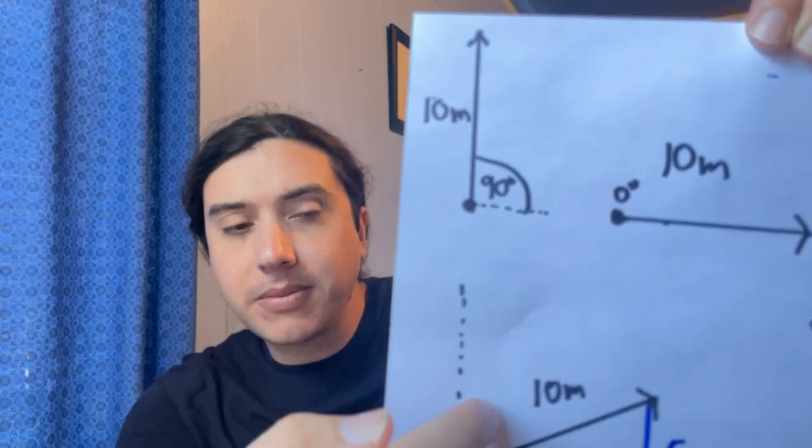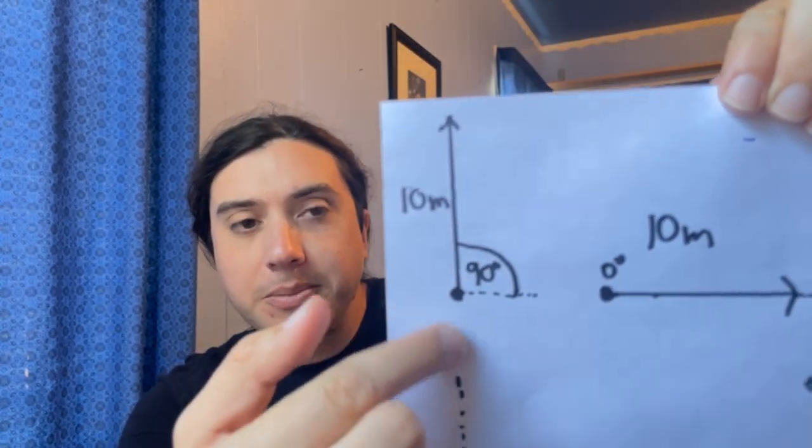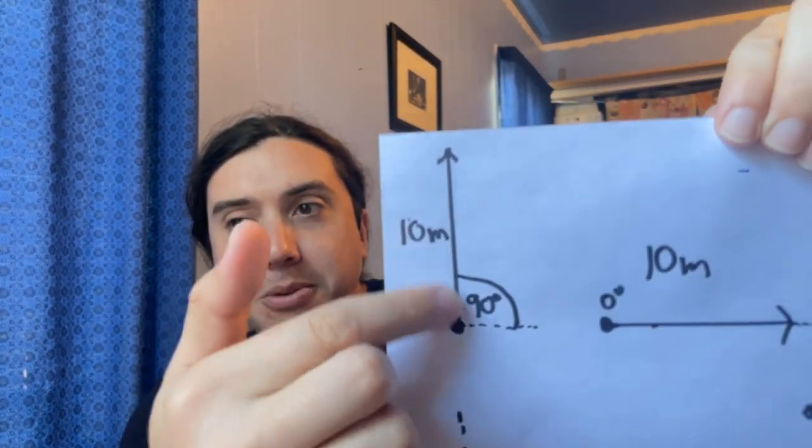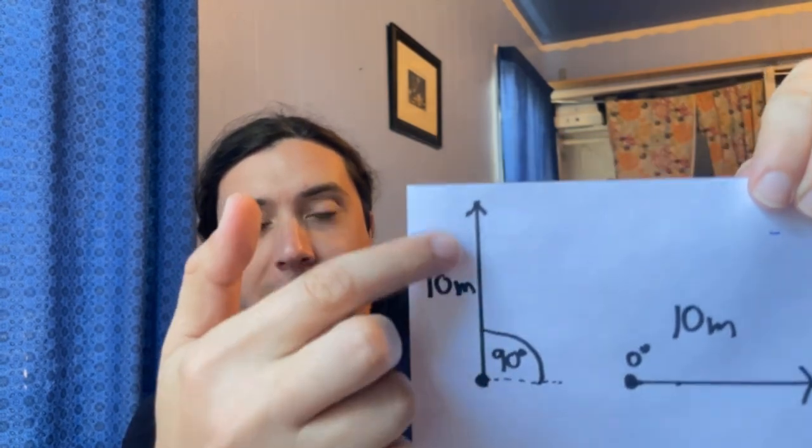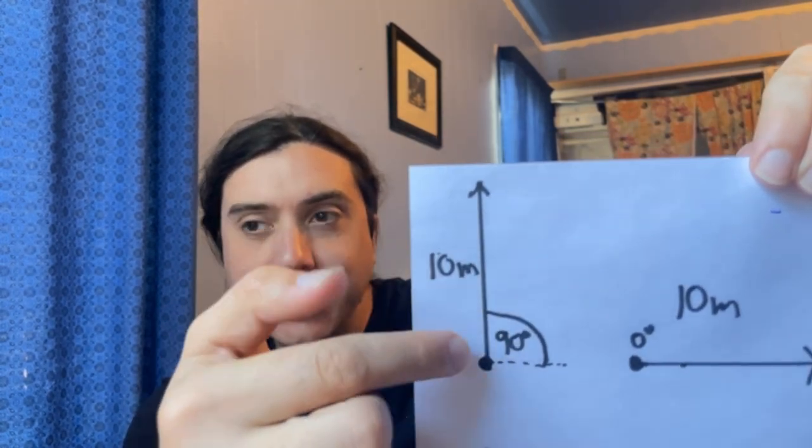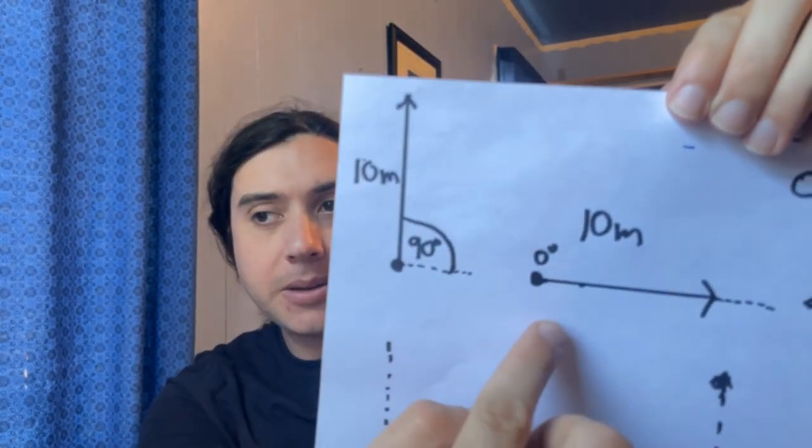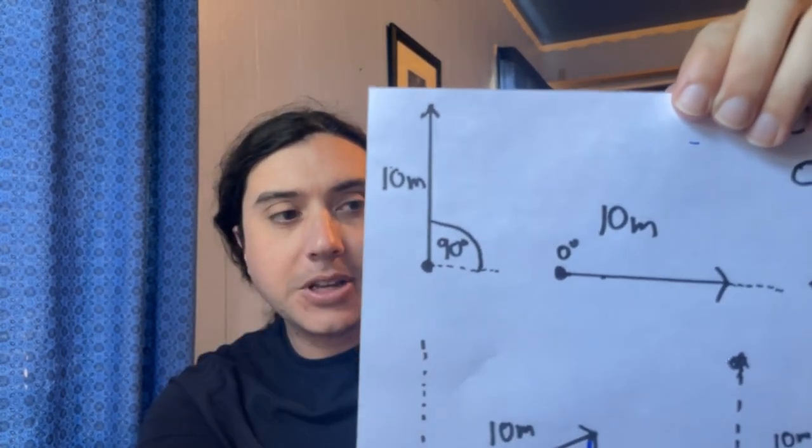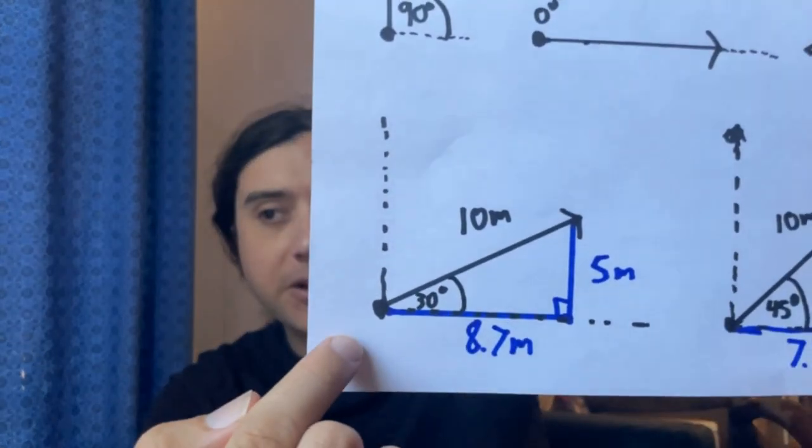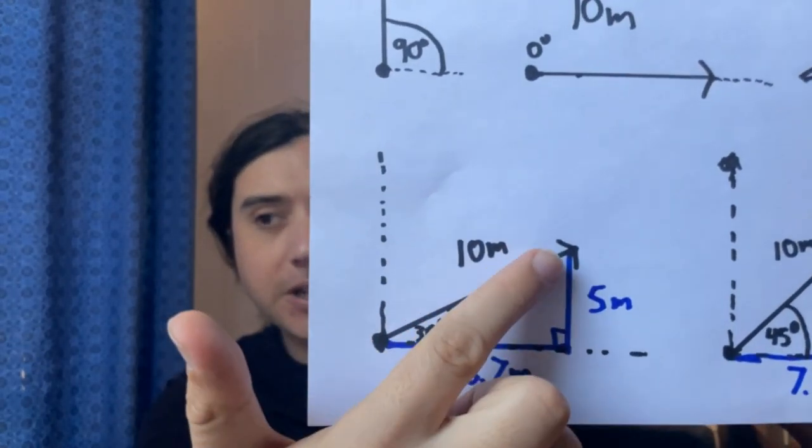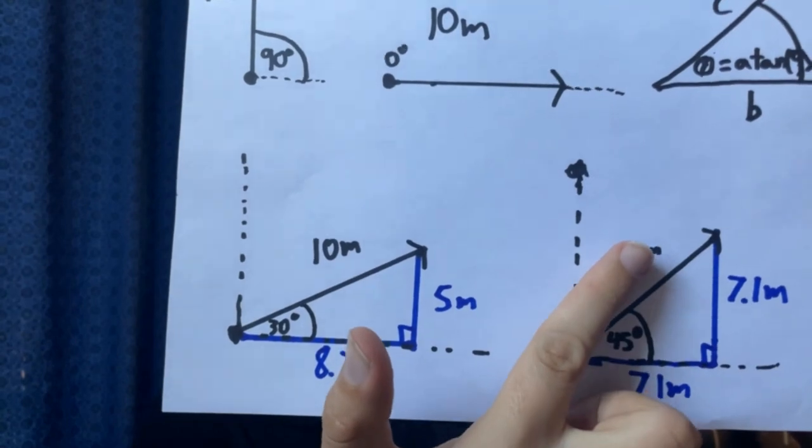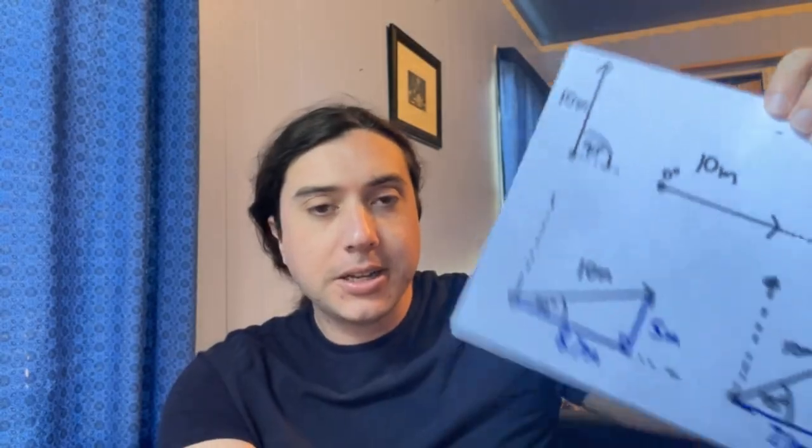Because when you have a distance, you need to also specify a distance in which direction. So if you have 10 meters, it could be 10 meters straight up, it could be 10 meters to the right, or it could be 10 meters at an angle of 30 degrees off the horizontal, or 10 meters at an angle of 45 degrees off the horizontal.